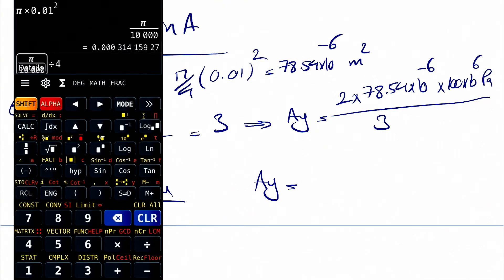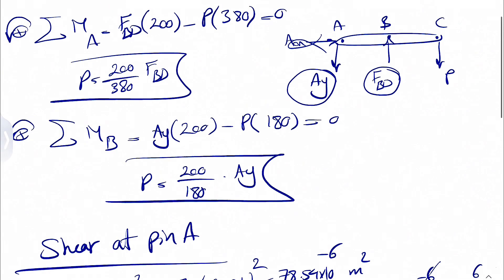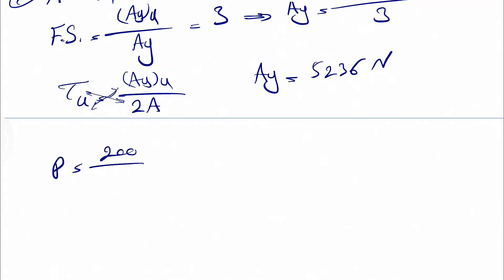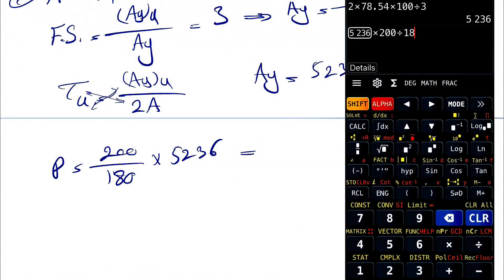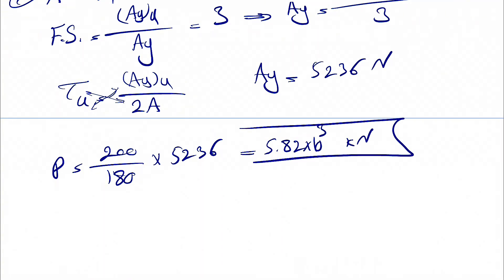Calculating: 2 × 78.54 × 100 ÷ 3 gives AY = 5236 newtons. Based on this, P equals (200/180) × 5236, which gives us 5.82 kilonewtons from the shear at pin A.